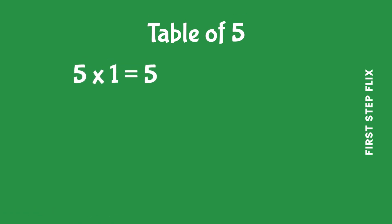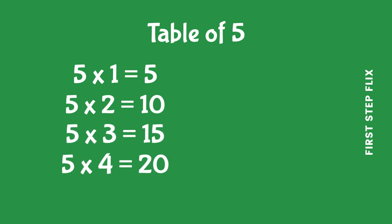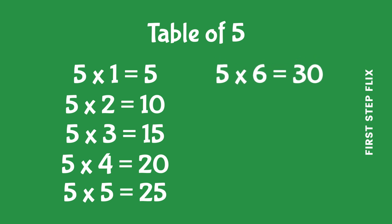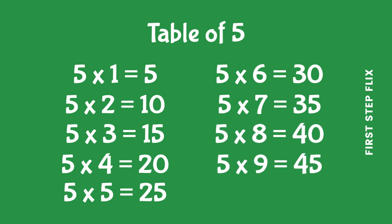Let's repeat. 5 ones are 5, 5 twos are 10, 5 threes are 15, 5 fours are 20, 5 fives are 25, 5 sixes are 30, 5 sevens are 35, 5 eights are 40, 5 nines are 45, 5 tens are 50.